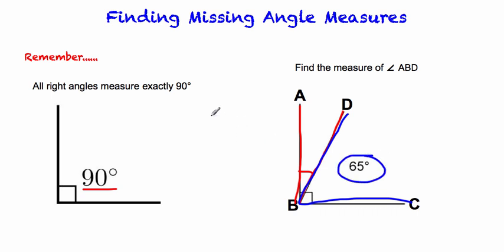If DBC equals 65 degrees, we're going to subtract the whole angle measure, which is 90, minus 65. So we'll do our math, 90 minus 65, borrow 10 minus 5 is 5, and 8 minus 6 is 2.